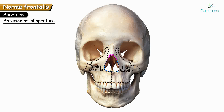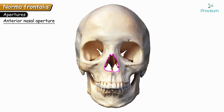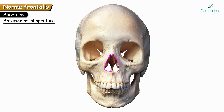The inferior part of the nasal aperture shows the two maxillae joining to form the upper jaw completely. The suture between the two maxillae is called the inter-maxillary suture. Just above the inter-maxillary suture there is a sharp spinous projection called the anterior nasal spine. One more point to know is the rhinion, which is the lower end of the inter-nasal suture.